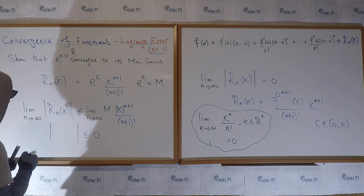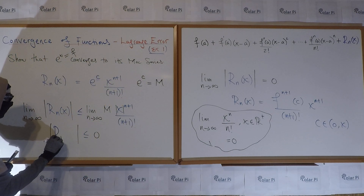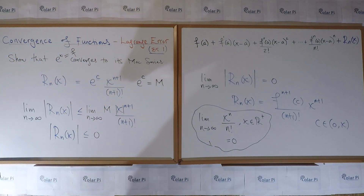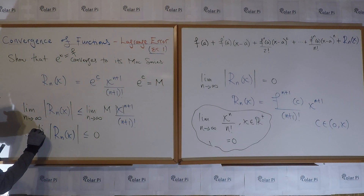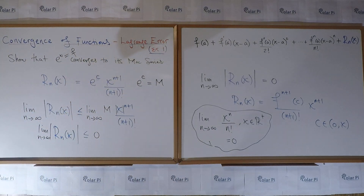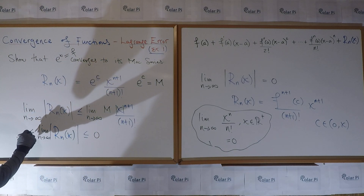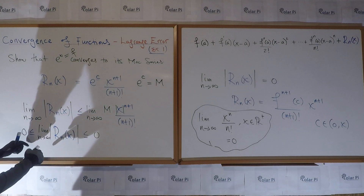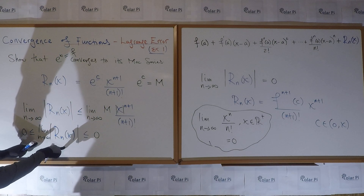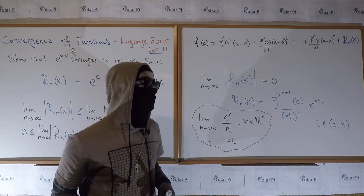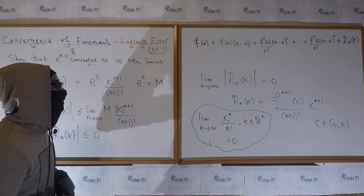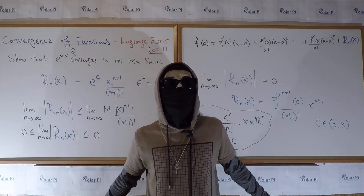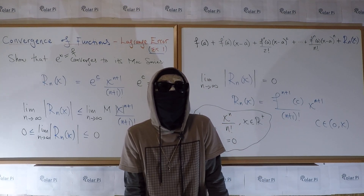So |R_n| is bounded on the right by zero, and by construction the smallest |R_n| can be is zero, so it is also bounded below by zero. By the squeeze theorem, |R_n(x)| as n goes to infinity must equal zero. That is exactly what was required to demonstrate that e^x converges to its Maclaurin series.